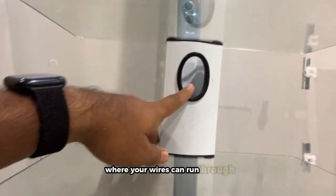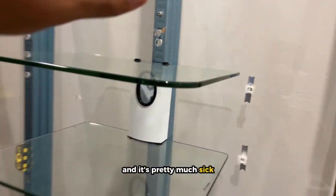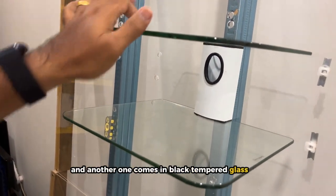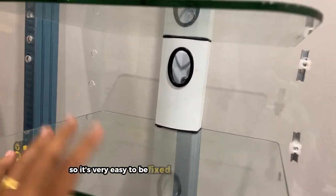It can be placed right below your TV. It has this hole right here where your wires can run through and it's pretty sleek. We have two colors - one is this and another one comes in black tempered glass also.